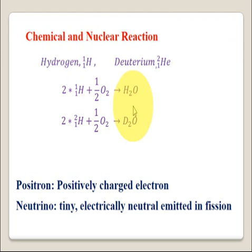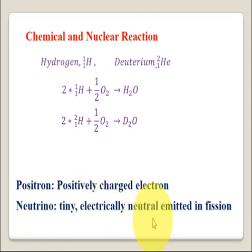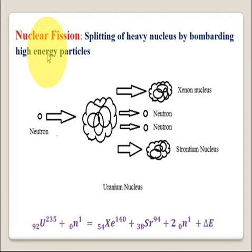In an atom, along with proton, neutron, and electron, there are also positrons and neutrinos. Positrons are positively charged electrons, and neutrinos are electrically neutral particles emitted in emissions. Nuclear fission is the process used in a nuclear reactor to generate energy. In nuclear fission, a slow, medium speed, or high speed neutron is bombarded on a heavy nucleus to split the nucleus into lighter nuclei, and a huge amount of energy is released. Splitting of a heavy nucleus by bombarding a high energy particle is called nuclear fission.